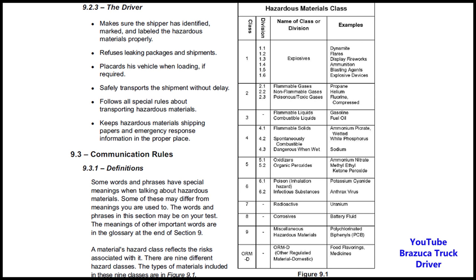Figure 9.1 — Hazardous Material Classes: Class 1, Explosives, includes Divisions 1.1 through 1.6 — examples include dynamite, flares, display fireworks, ammunition, blasting agents, and explosive devices. Class 2, Gases, includes Division 2.1 Flammable Gases, Division 2.2 Non-flammable Gases, and Division 2.3 Poisonous/Toxic Gases — examples include propane, helium, and fluorine. Class 3, Flammable Liquids and Combustible Liquids — examples include gasoline and fuel oil. Class 4, includes Division 4.1 Flammable Solids, Division 4.2 Spontaneously Combustible, and Division 4.3 Dangerous When Wet.